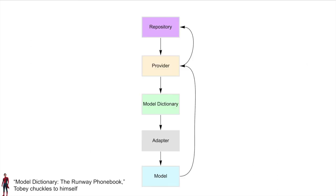Here's a visual flow of how this works: the request comes to the repository, which queries a provider. The provider asks the model dictionary which adapter to use; the model dictionary returns the user adapter. The user adapter generates a model, which is returned to the provider, then to the repository — giving a fully fleshed-out model for the original request.